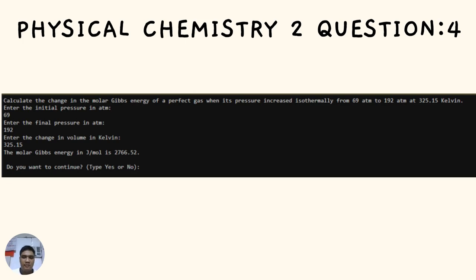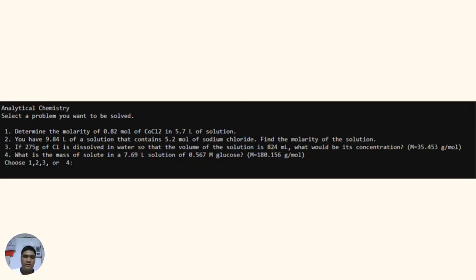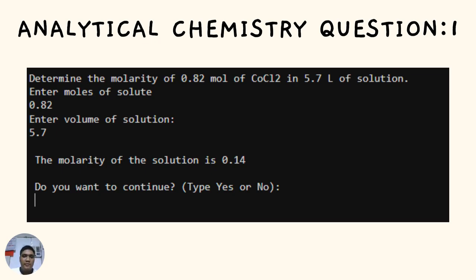Let's proceed to the third subject, which is Analytical Chemistry. This section of the code is responsible for solving analytical chemistry problems. It asks the user to enter the required volume, concentration, and molarity formula. When you enter number 3, it shows four questions. Question number one: Determine the molarity of 0.82 mol of COCl2 in 5.7 liters of solution. Enter moles of solute as 0.82 and volume as 5.7. The molarity is 0.14.